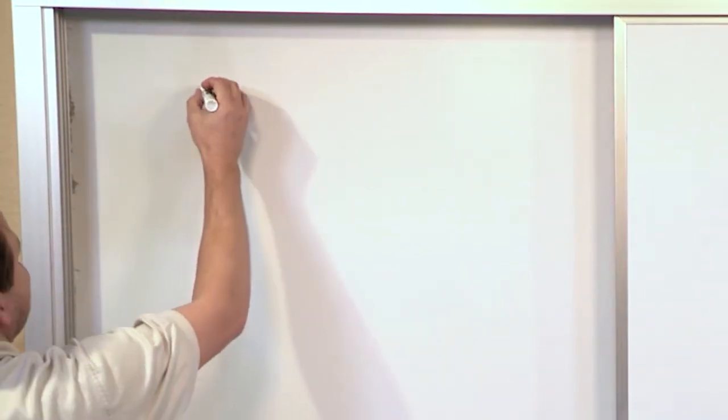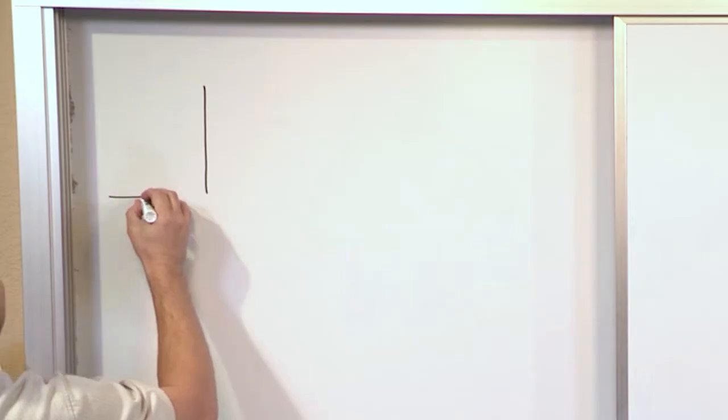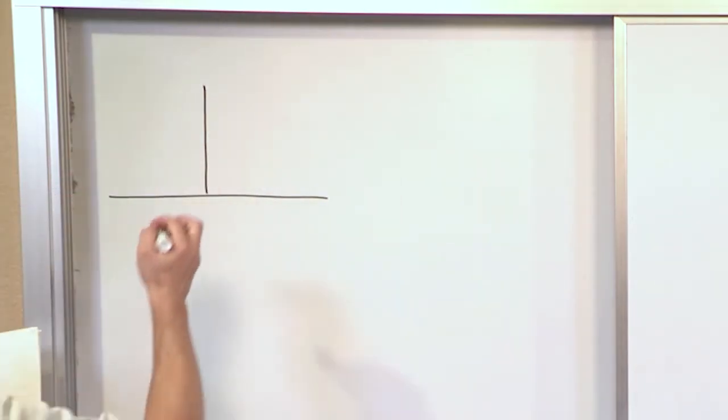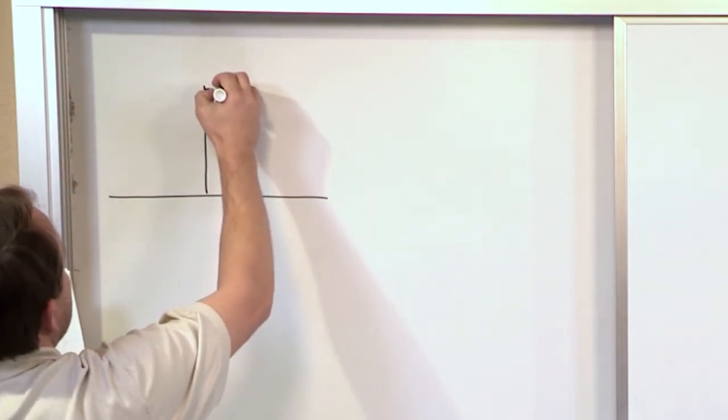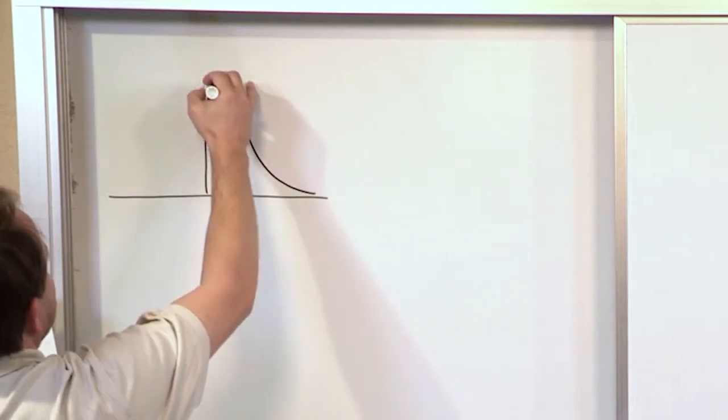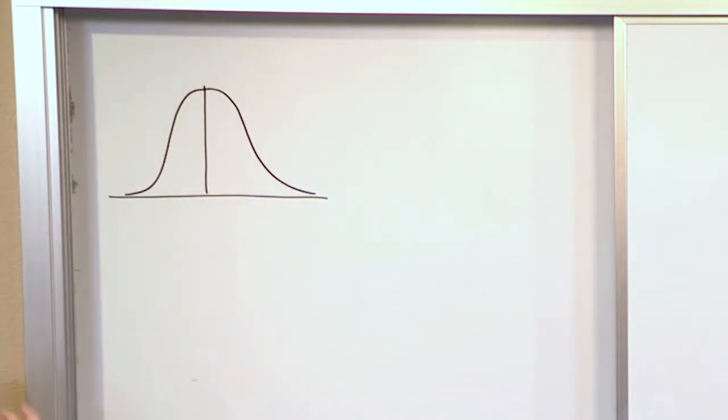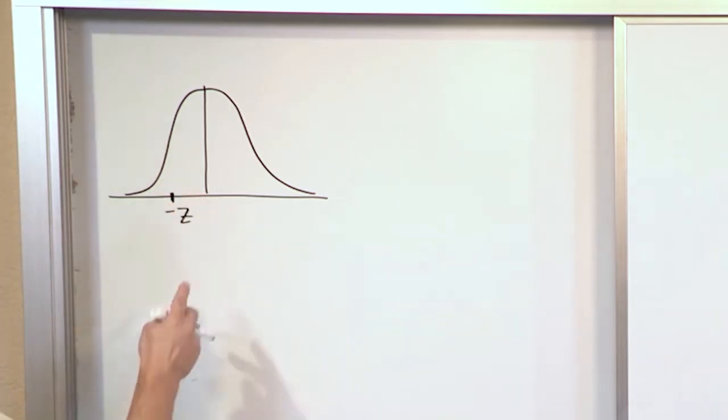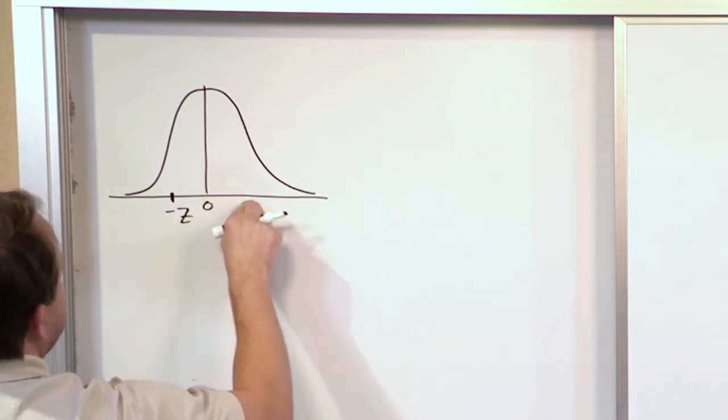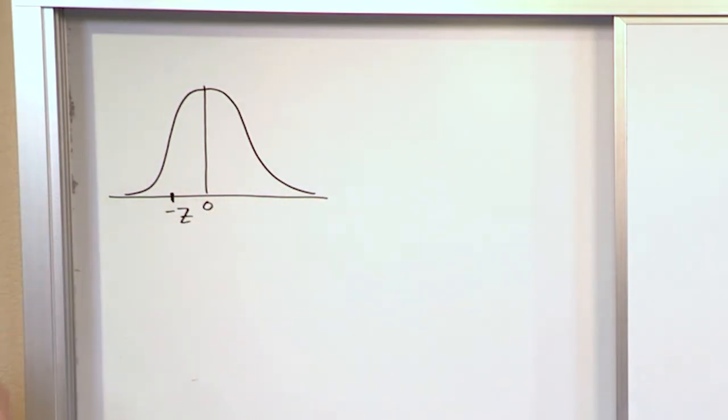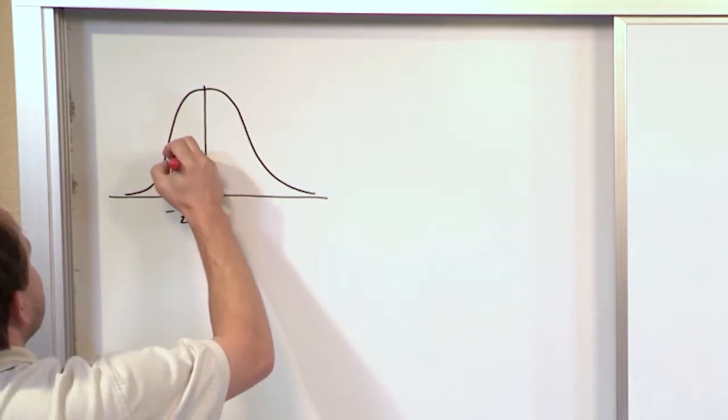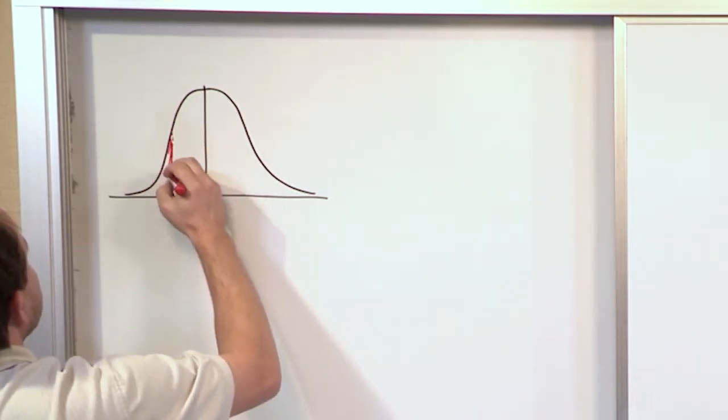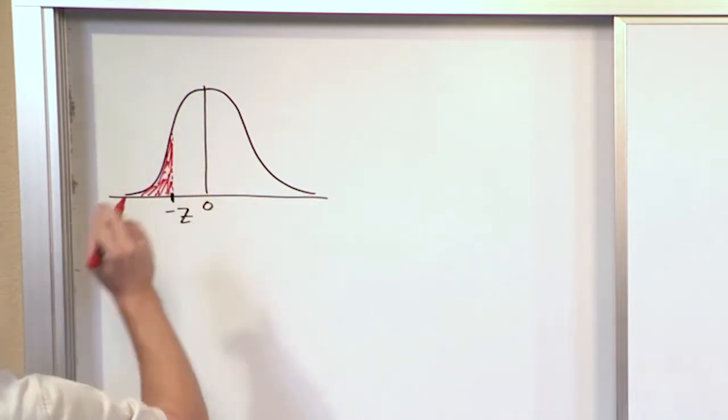For instance, you might have a problem that ends up boiling down after you convert it to the standard normal distribution. You might have a standard normal distribution that might look like something like this and in your particular problem, you find out that here you have some value of negative z because this is zero, this is positive z-scores and these are negative z-scores. You might find out in the course of your problem that you're trying to find the area under this curve to the left like this.